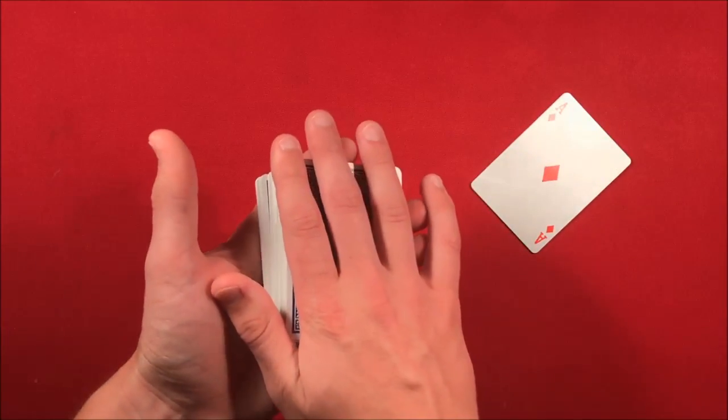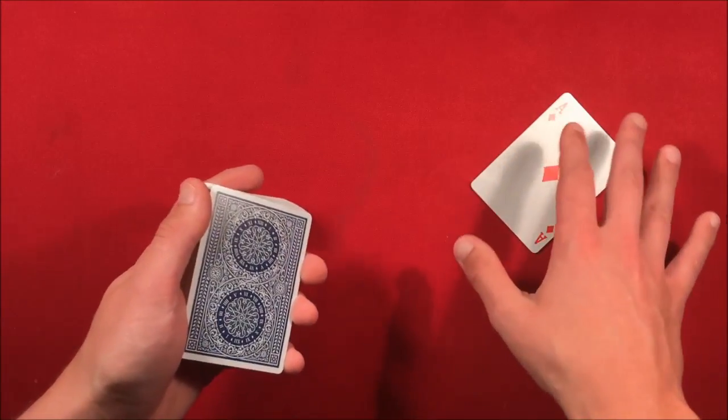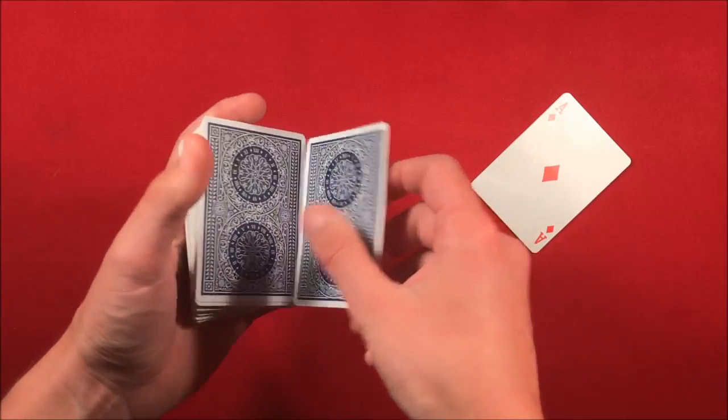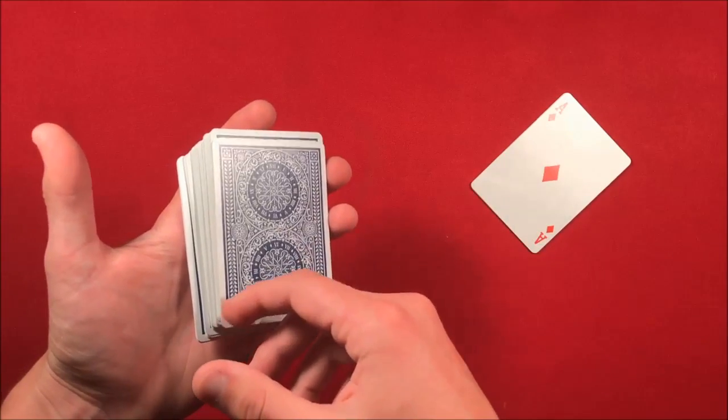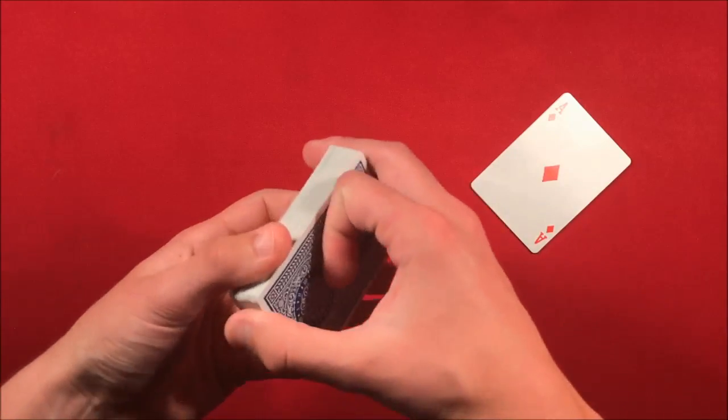You square everything up and now you have a card in between them. These are squared up and you say I'm going to leave this off to the side or you could have the spectator hold them in their hands, but make sure they don't spread them around too much. At this point you have the ace of clubs on top.